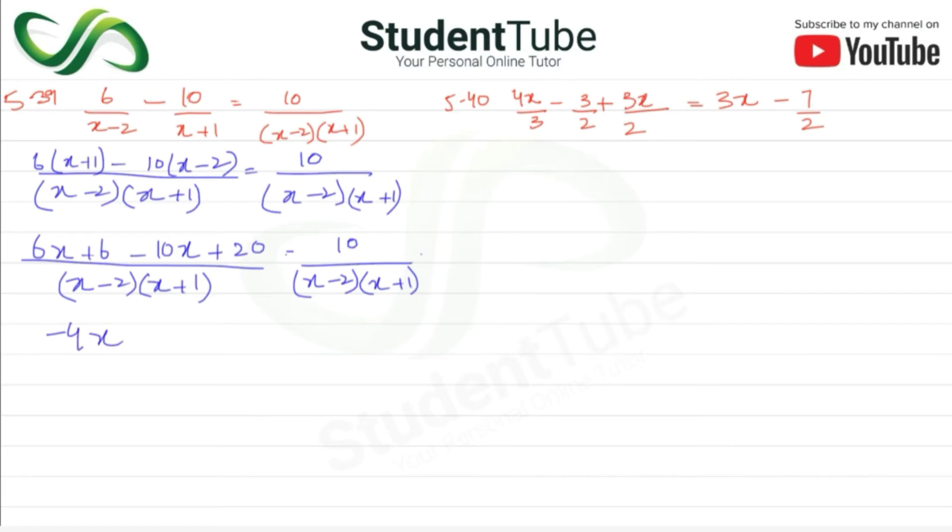x plus 2, x plus 1 is equal to 10 upon x minus 2, x plus 1. Since denominators are equal, x minus 2, x plus 1 is equal to 10. Numbers on one side, variables on one side. Minus 4x is equal to 10 minus 26.